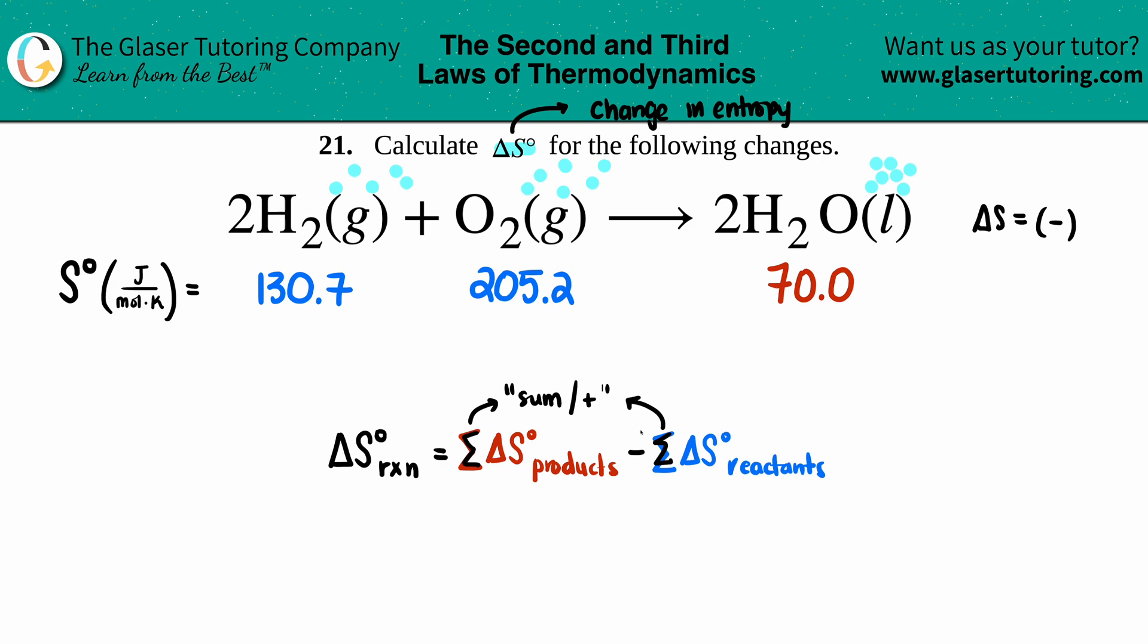Are we going to keep these values or do we have to change them? Well, this goes by the coefficients. I have a 2 in front of the H₂, that means I have to take that 130.7 and times it by 2. But I only had a 1 in front of the O₂, so that means I'm just going to take this value and times it by 1. Same thing here: I have 2 H₂O's, so I have to take that 70 and times it by 2.